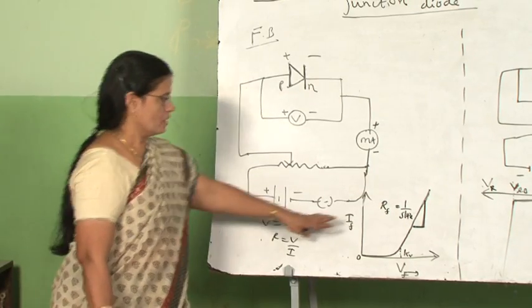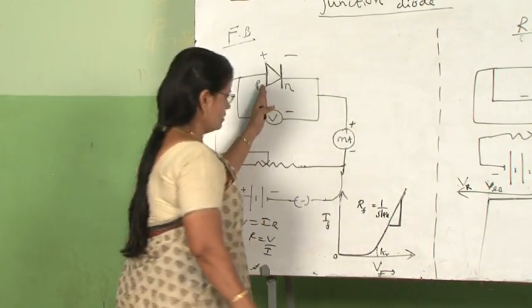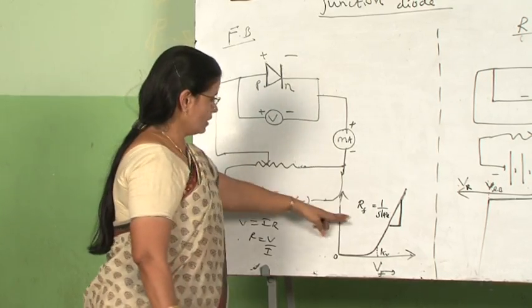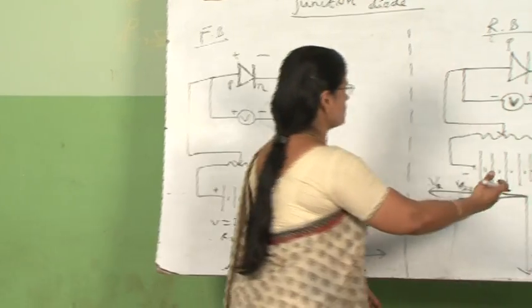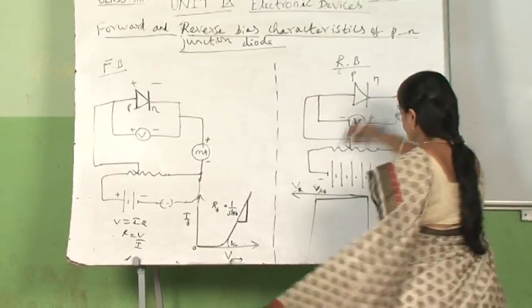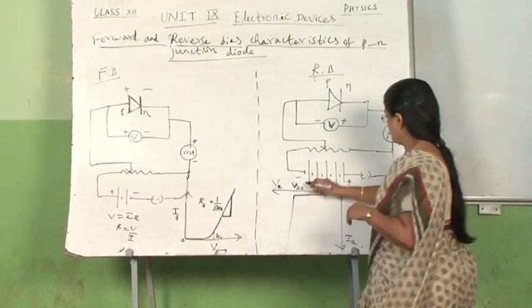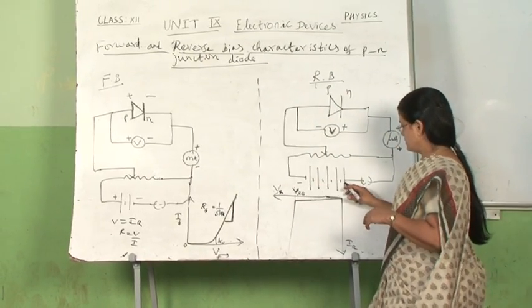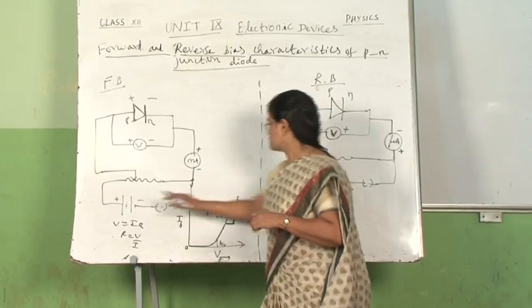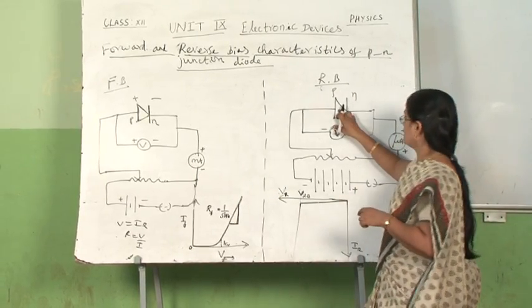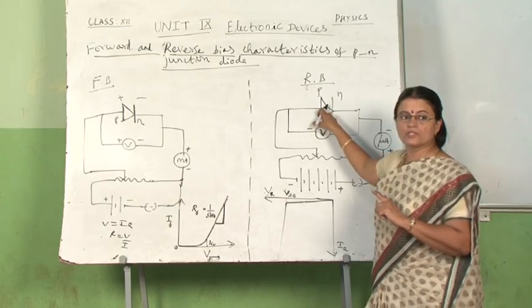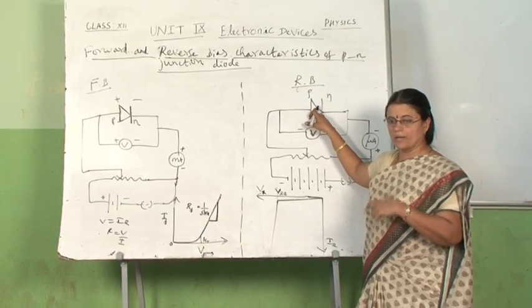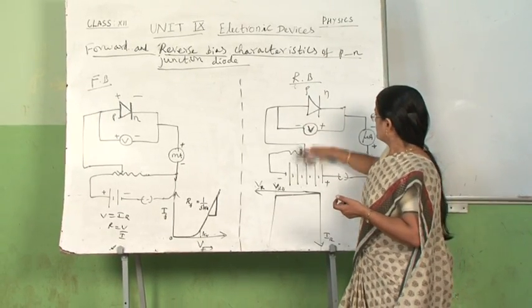In the case of reverse bias, if you see, the connection is just reversed. You may be wondering why I am connecting more number of cells here compared to this one. Because in this case, as I told you earlier, the conduction in reverse bias is due to minority carriers. So we have to apply more voltage for that conduction. So here P is connected to the negative terminal, N is connected to the positive terminal, which is the reverse bias.